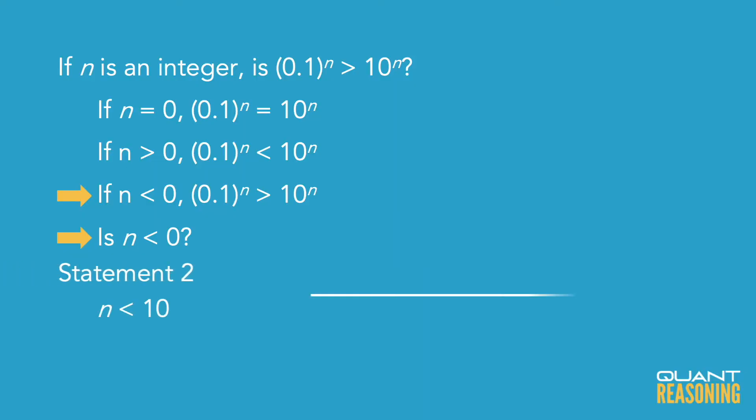What about statement 2? That one tells us that n is to the left of 10 on the number line. So is it negative? It still could be. It's anywhere to the left of 10, but it's not necessarily negative.